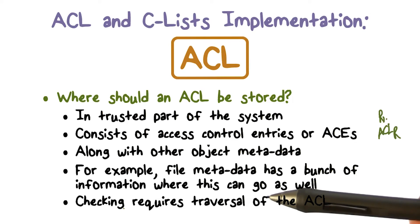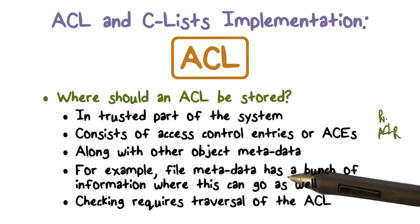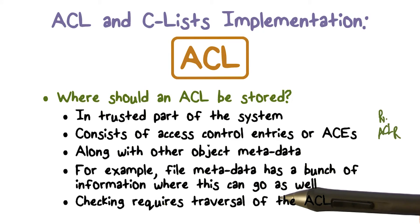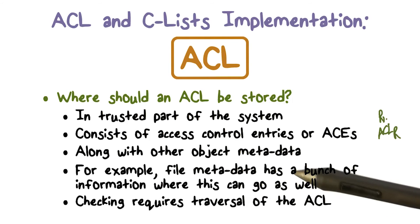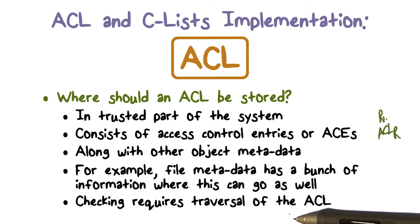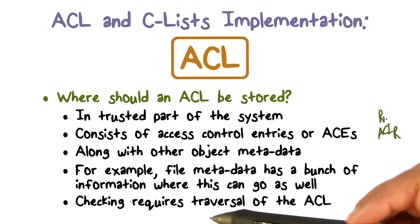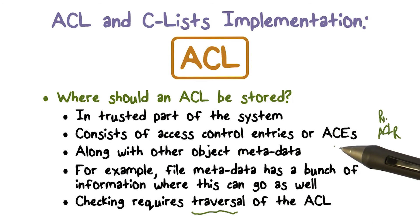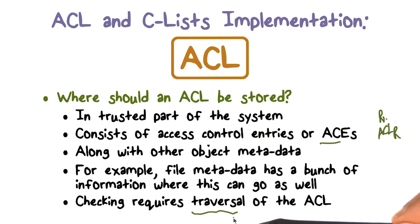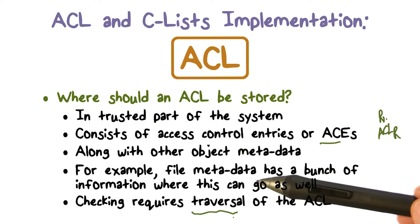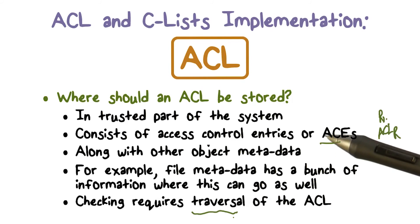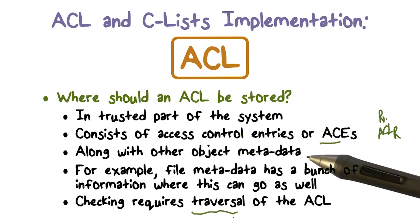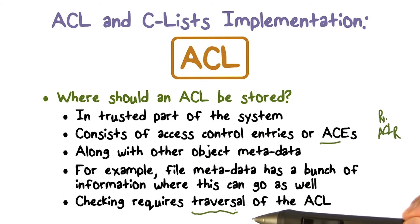How do we perform that access control check? Let's say the request is coming from Alice. The request source is Alice's UID, and the request is for file foo. We're going to go to the metadata for file foo, where we'll also find the ACL for file foo. Once we have that ACL, we basically have to traverse it, looking for an access control entry for Alice, and then see if the access rights in that ACE grant Alice permission to access the object in the manner requested — for example, if it's a read, does the read access right exist in the ACE for user Alice?